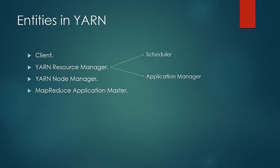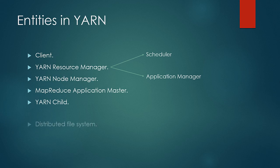The application master is spawned under the node manager on instruction by the resource manager. It is spawned once for every job and terminates ten minutes after completion. Fifth entity is YARN child, which manages the run of the map and reduce tasks and is responsible for sending updates and progress to the application master. The last entity is the distributed file system, which contains all the necessary input files and where output files are returned to.